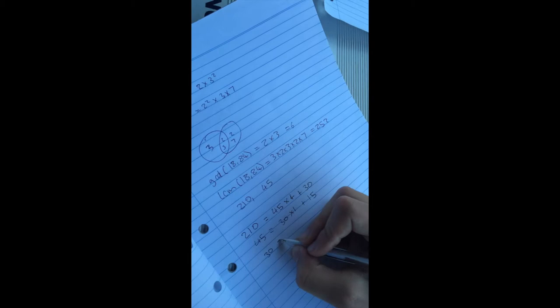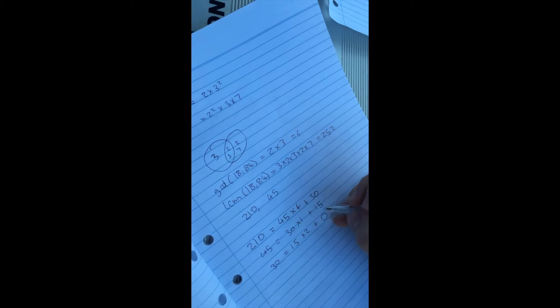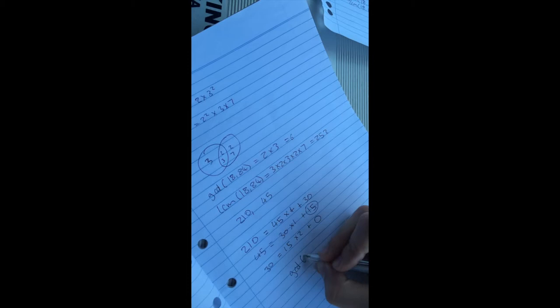And this time the remainder is 15. And we just keep going until we get the remainder 0, and the last non-zero remainder would be the GCD. And this is more efficient to use in larger numbers. So we get 15 for this one.